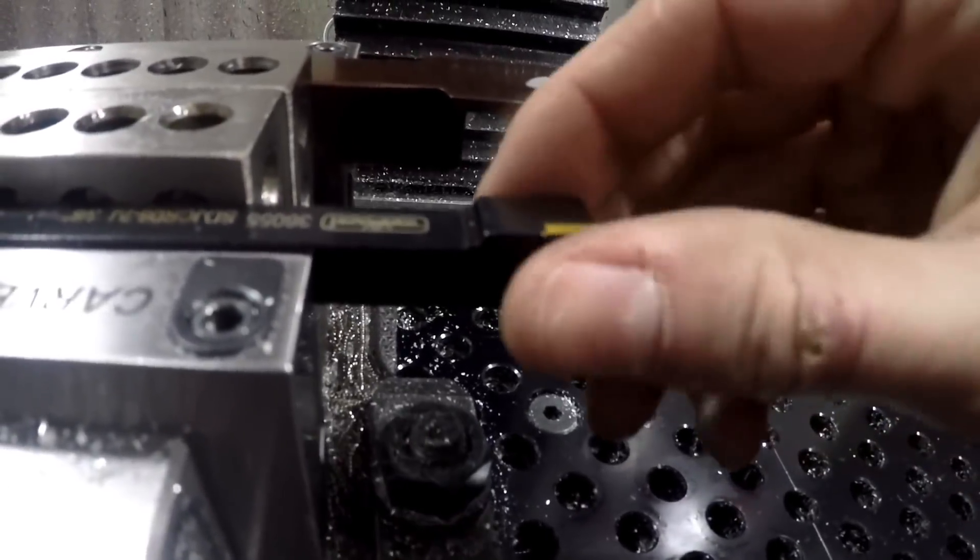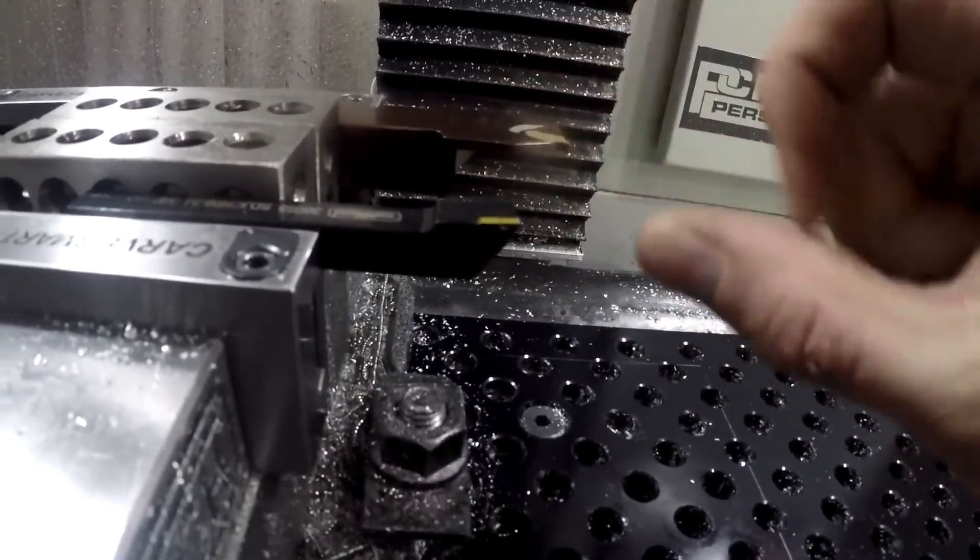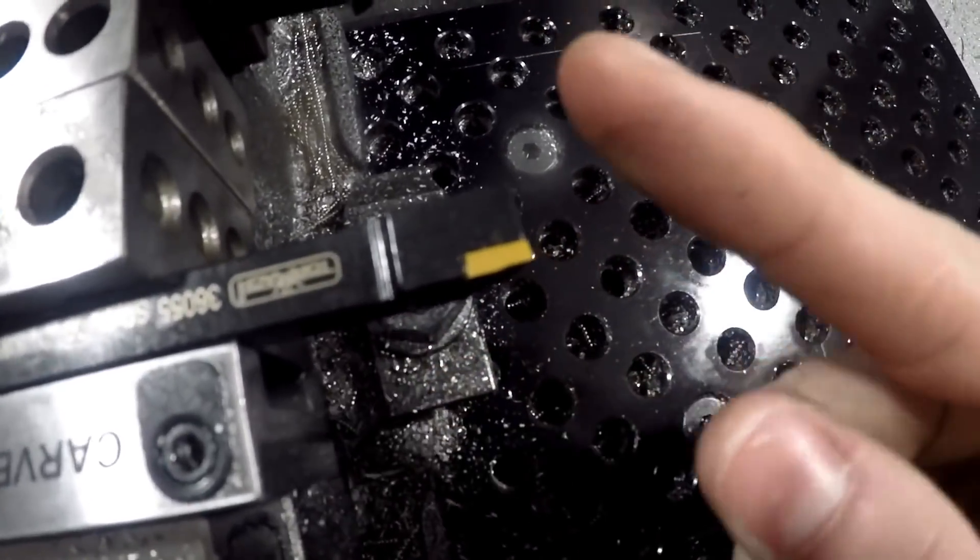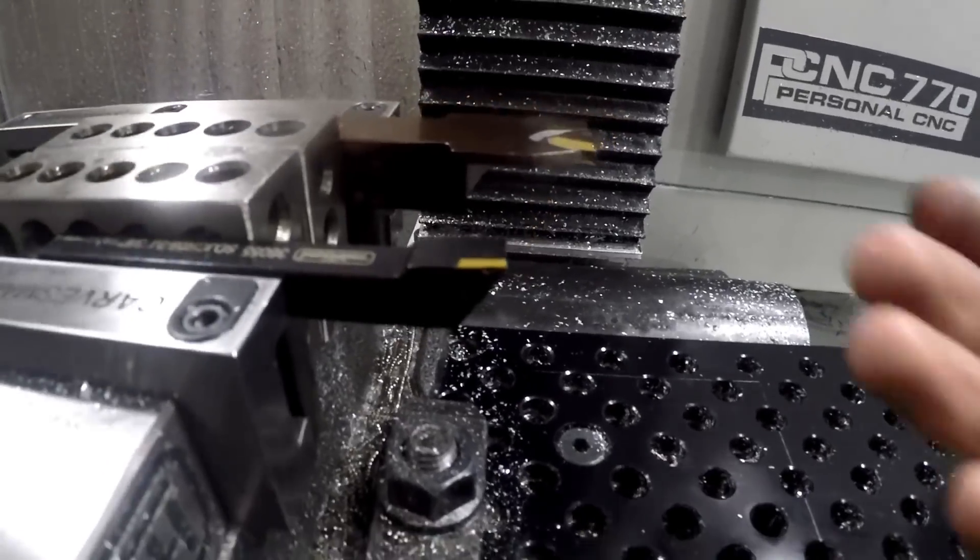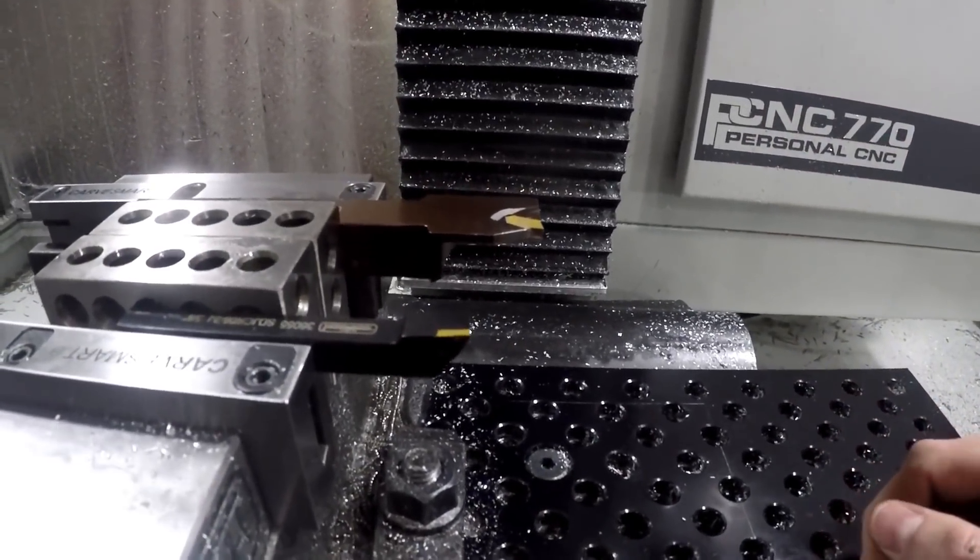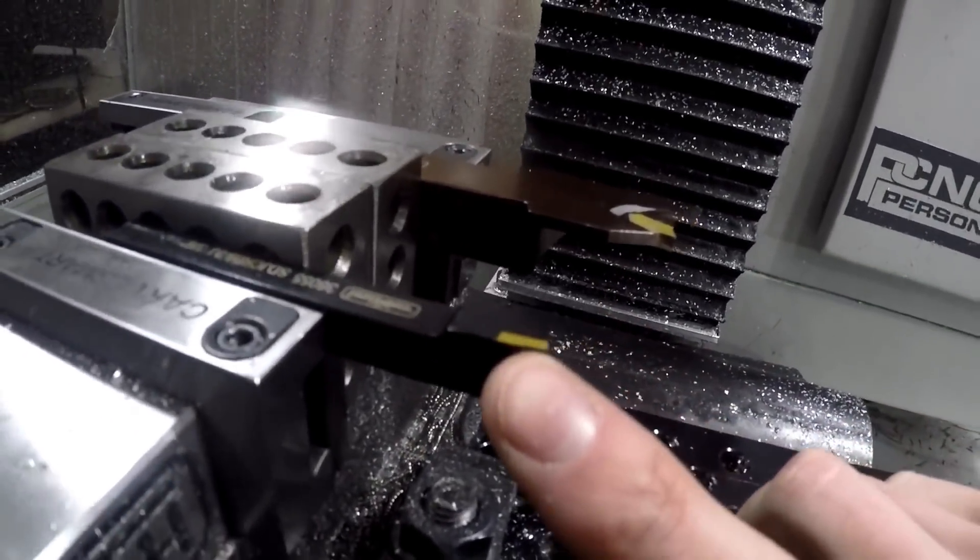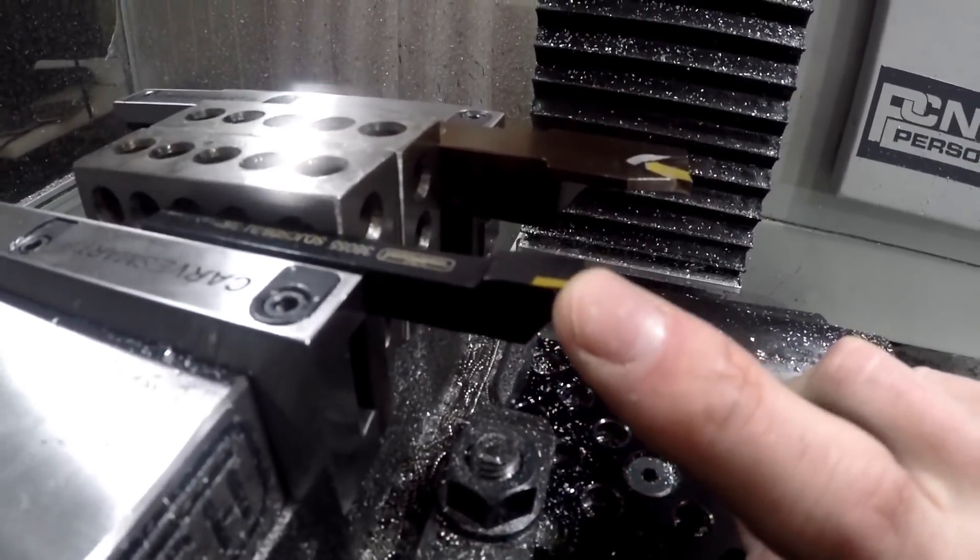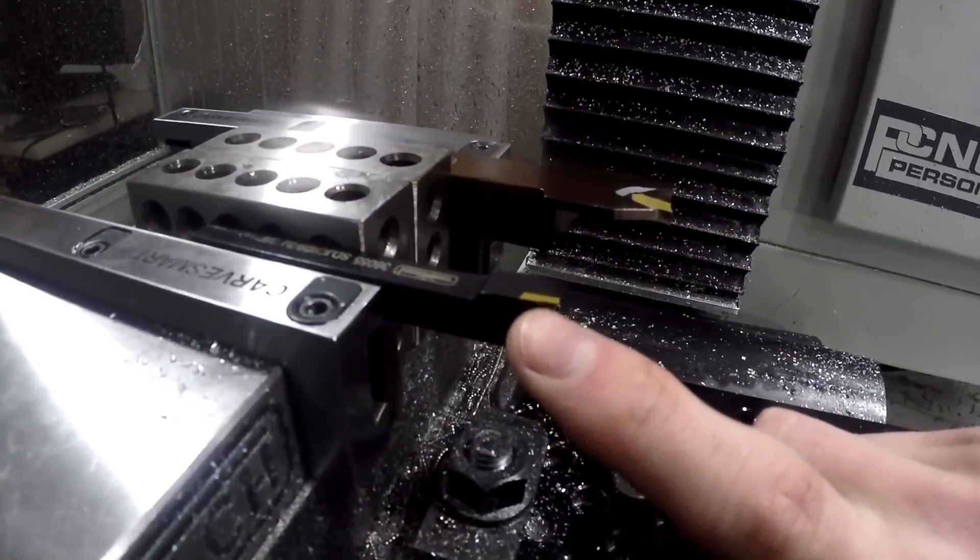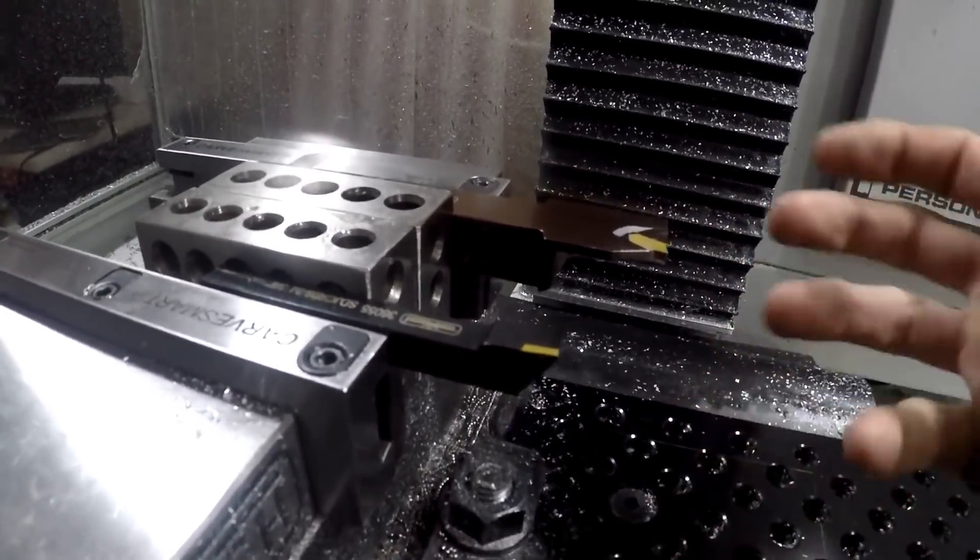This is the DCMT tool. The D means diamond shaped at 55 degrees. C specifies this clearance angle. M specifies the tolerance. And the last one, T, specifies the chip breaker - what kind of angle we got going on here. There's little ridges on the insert that act as a chip breaker, so they break the chip off so you don't have a bird's nest flopping around.